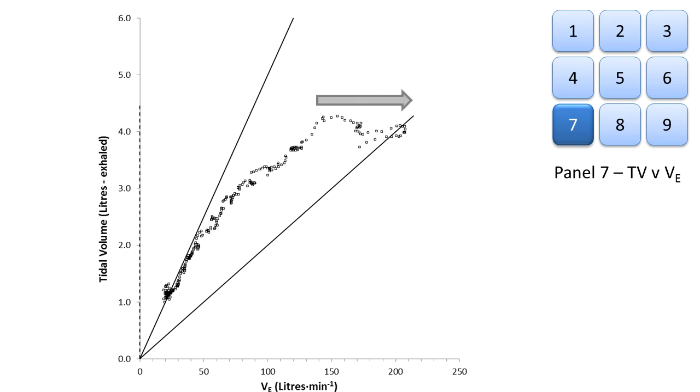When data points move directly from left to right, this is an indication that ventilation is increasing as a result of breathing frequency only. As seen here, the tidal volume isn't changing much from 4 litres, yet the ventilation is increasing.